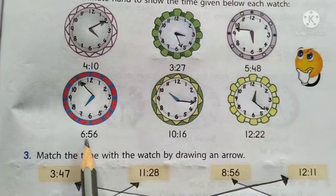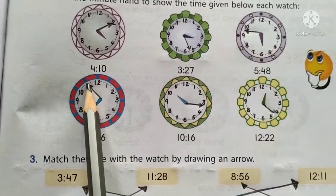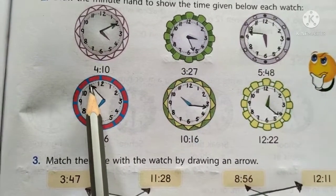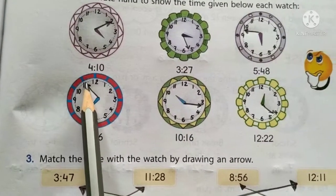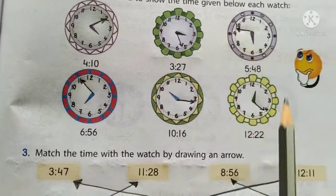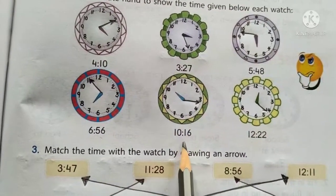If it is 6, 56, then the minute hand will be at the first dot after 11. 11 is 55, so 56. In this manner, you will draw the minutes hands according to the time.